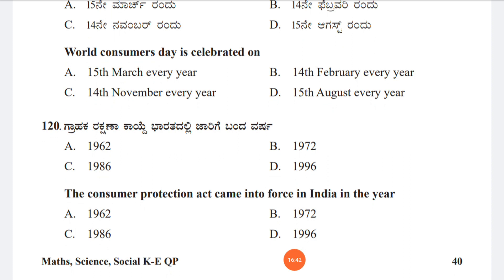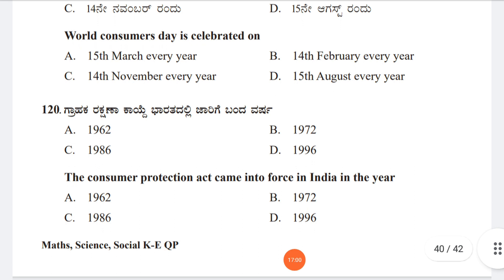Question 120 (the last question): The Consumer Protection Act came into force in India in which year? Option A: 1962, Option B: 1972, Option C: 1986, Option D: 1996. The answer is Option C, 1986.